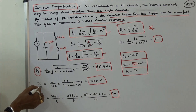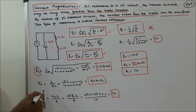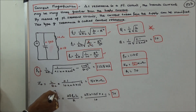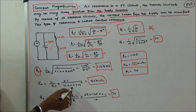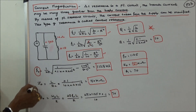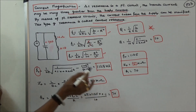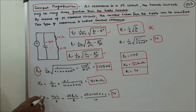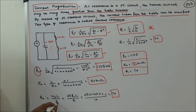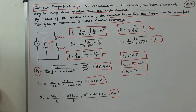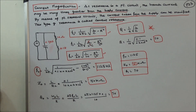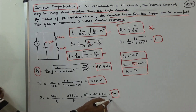Next, we calculate the dynamic impedance using the formula Z₀ equals L by RC. With L = 0.1, R = 10, and C = 0.2×10⁻⁶, the dynamic impedance is 50 kilo-ohms. The quality factor Q₀ equals ωR·L divided by R, where ωR equals 2πFR. Therefore Q₀ equals 2π·FR·L divided by R. Substituting all values, Q₀ equals 70.